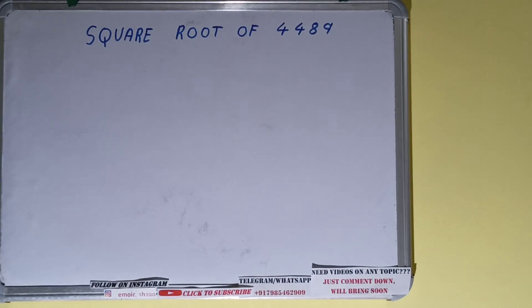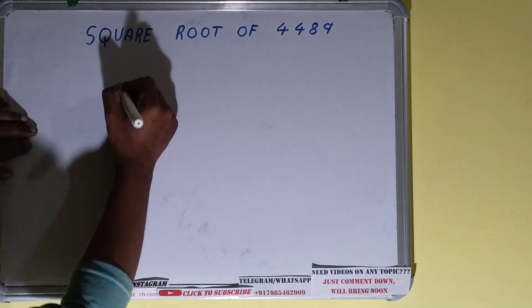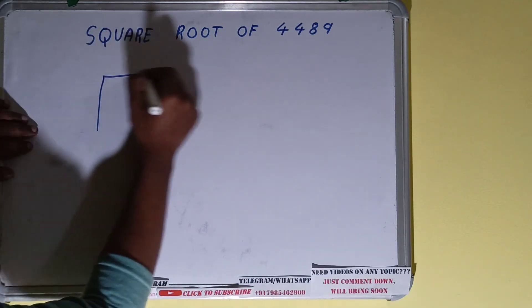Hello friends, and in this video I'll be helping you with the square root of the number 4489. So let's start. We'll be using the division method here for finding out the square root of 4489. So first we need to write the number here.